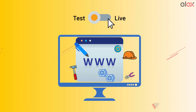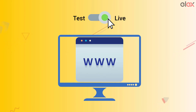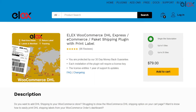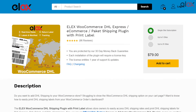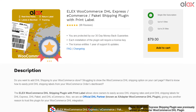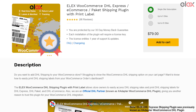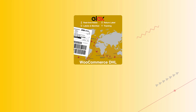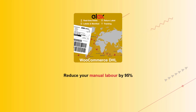The best part is that you can switch between live and test modes, so it becomes easy to test the plug-in first and then proceed with live shipments. Our WooCommerce DHL Express plug-in with print label is certified by the DHL Express CIS team in the UK.